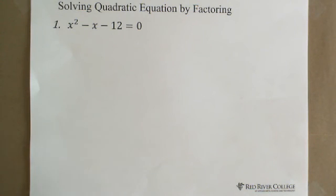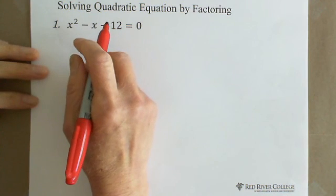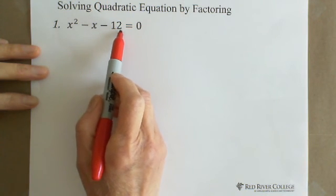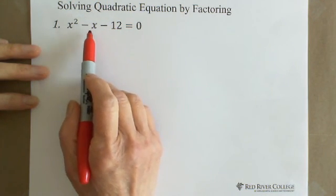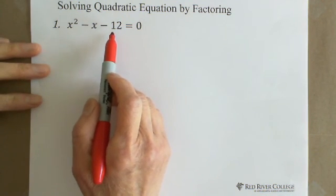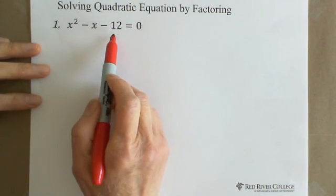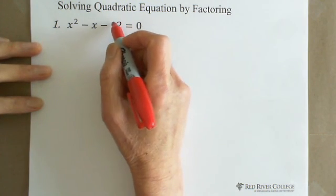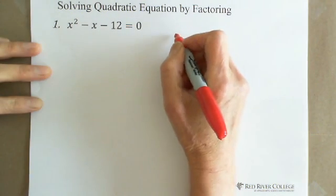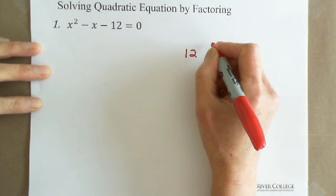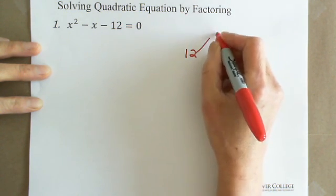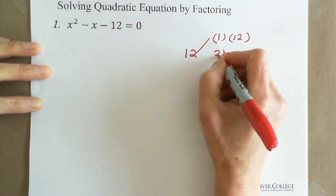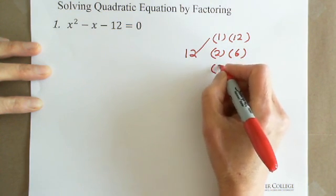When we do factoring, we need to look for two numbers. These two numbers multiply together equals negative 12, and they add together equals negative 1 (the coefficient of x). So looking for these two numbers, we need to factor negative 12. First, forget the negative — find two numbers that multiply to 12. We have 1 times 12, 2 times 6, and 3 times 4.